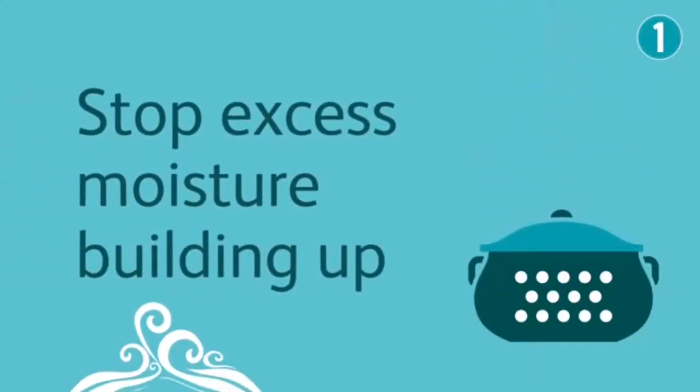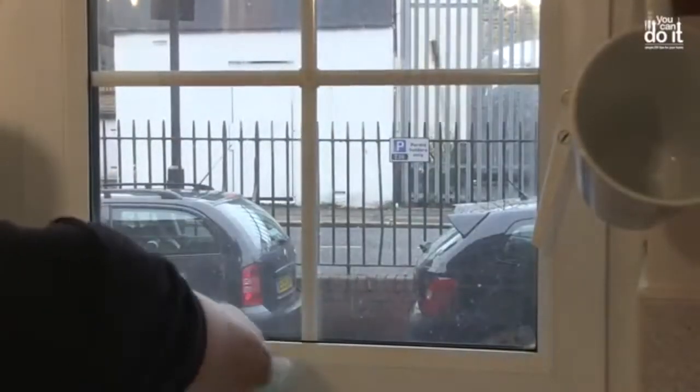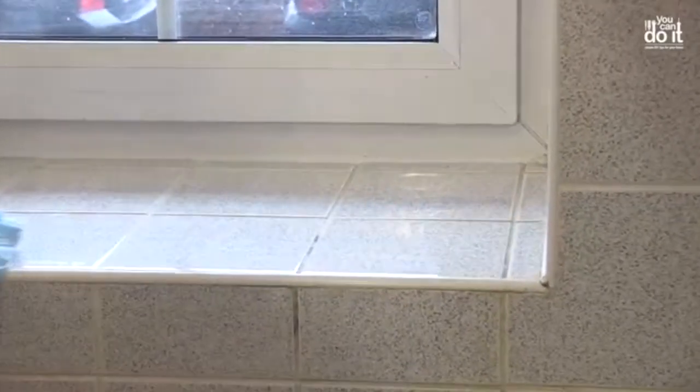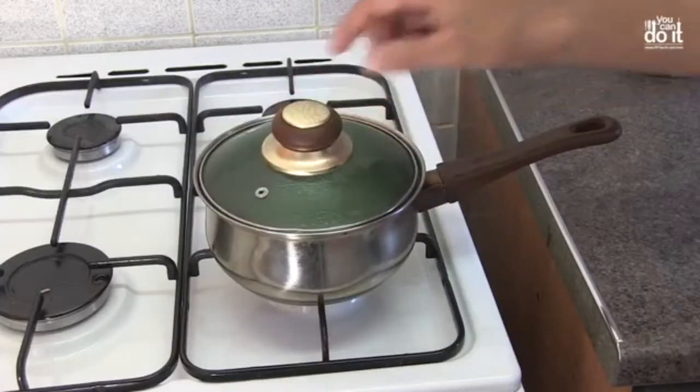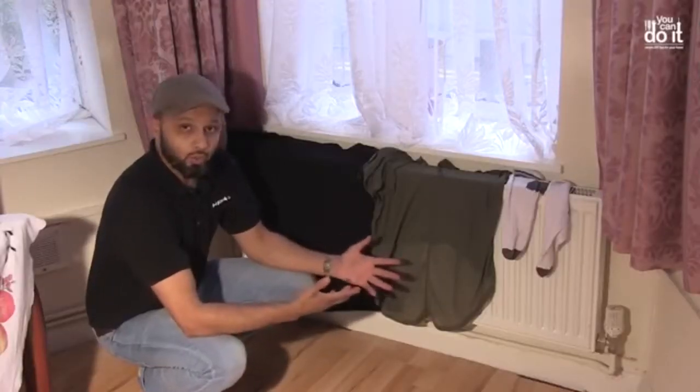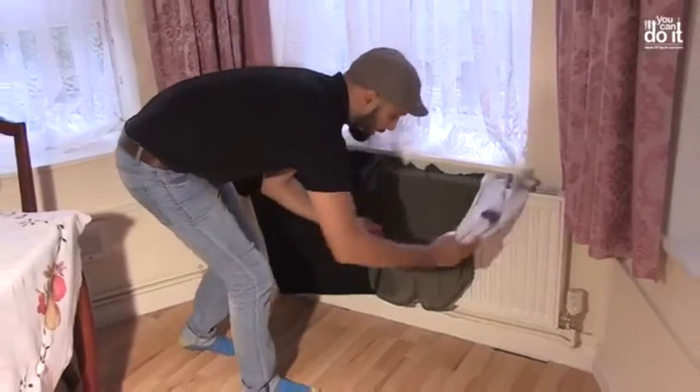Stop excess moisture building up. To stop excess moisture from building up, wipe down surfaces where moisture settles. Cover boiling pans when cooking. When cooking, bathing, or drying clothes, make sure you close the door behind you to prevent steam from going into the colder rooms of the property, even after you've finished. Avoid using a radiator to dry your clothes. If you are drying your clothes inside, use a clothes airer and make sure you open the window and close the door.